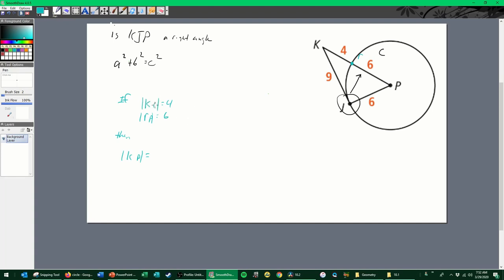The segment addition postulate tells us if one line segment ends at a point and then the next one continues at that same point, I can just add them together. So KP is equal to KR plus RP. That means KP is 4 plus 6, which is 10. So I can say that this whole line segment is 10. Now all we have to do is set up the Pythagorean theorem and see if it's a true statement.